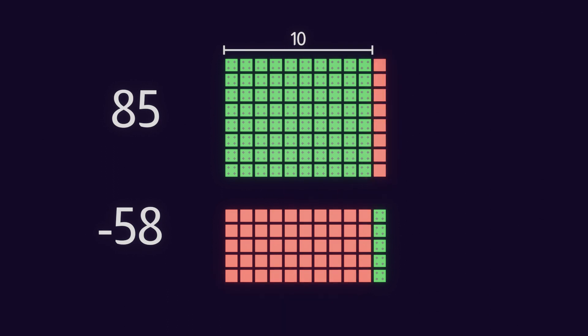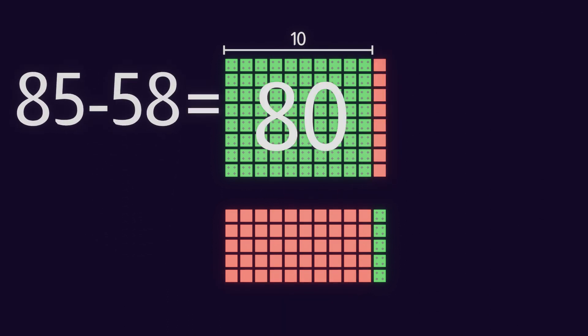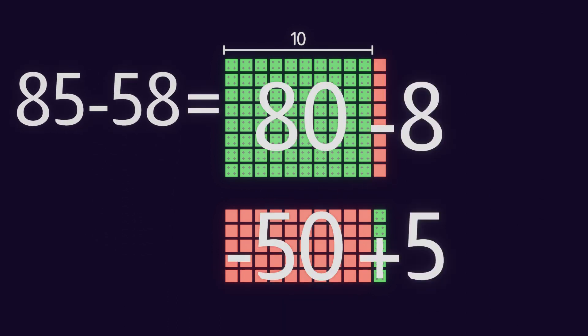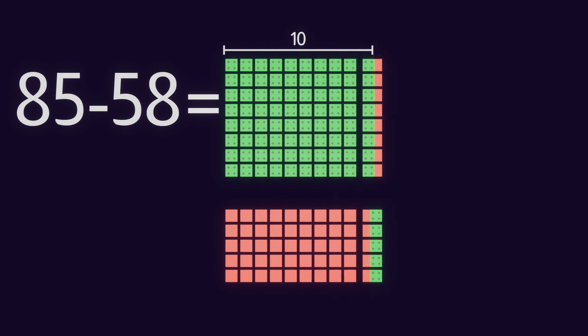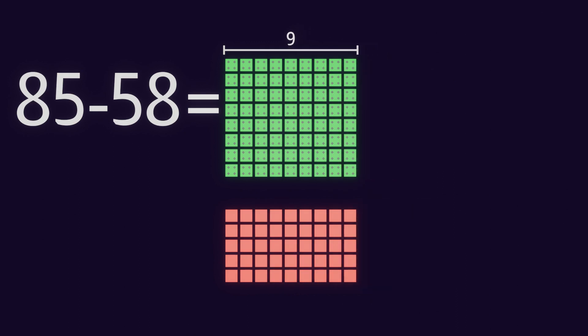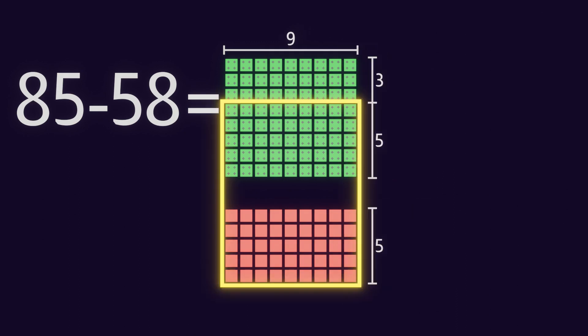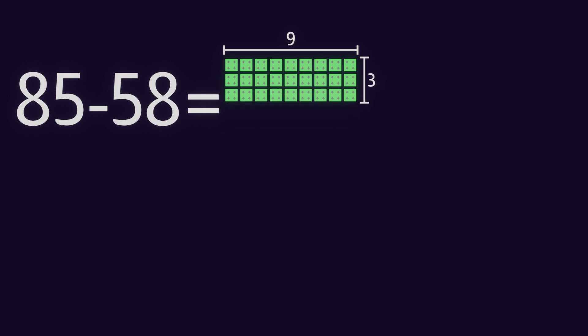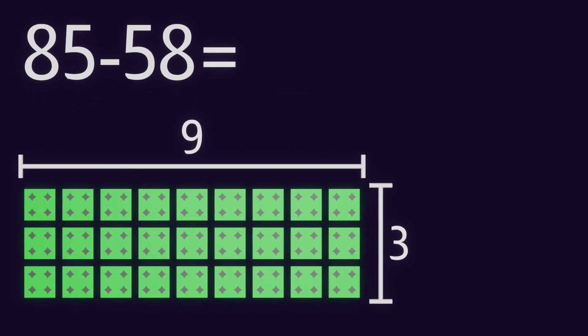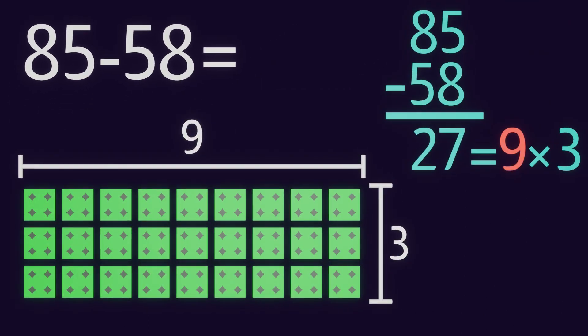And now we've basically represented 80 minus 8 minus 50 plus 5. These parts on the right annihilate each other, and that's how you get a width of 9. Then the tens digits annihilate each other, and you're left with the product of 3 times 9.